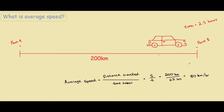However, you should note that even though the average speed was calculated to be 80 kilometers per hour, the car was probably not travelling at 80 kilometers per hour the whole time. It may have, say, travelled at 100 kilometers per hour, then stopped for a bit at a traffic light, then kept going at 90 kilometers per hour. So this is why we use the word average, because this is the average speed it took for the entire duration.